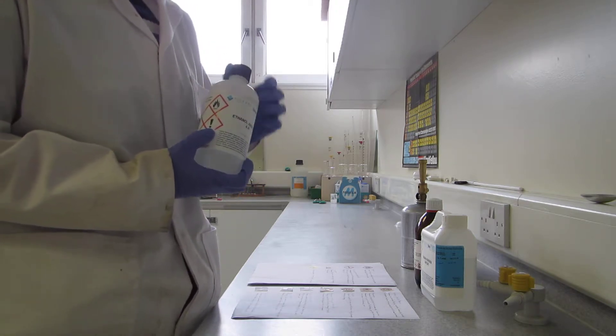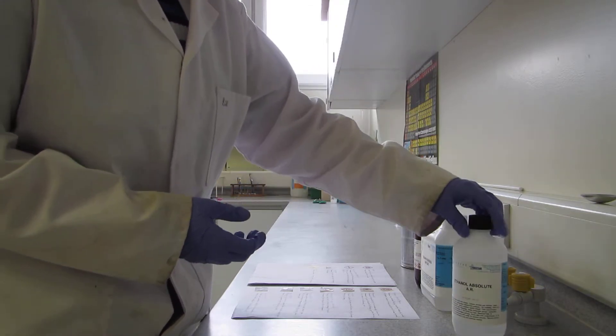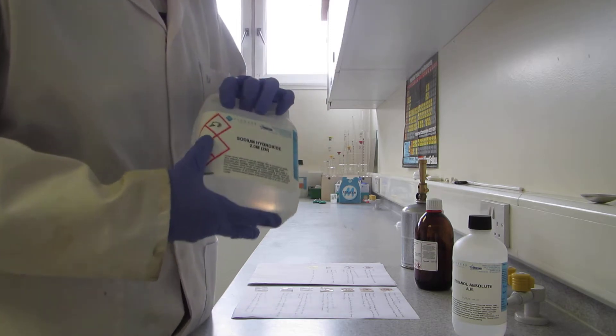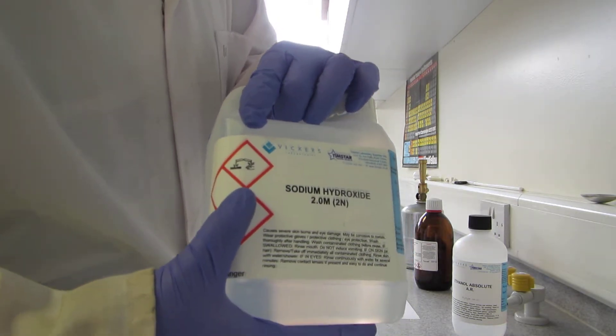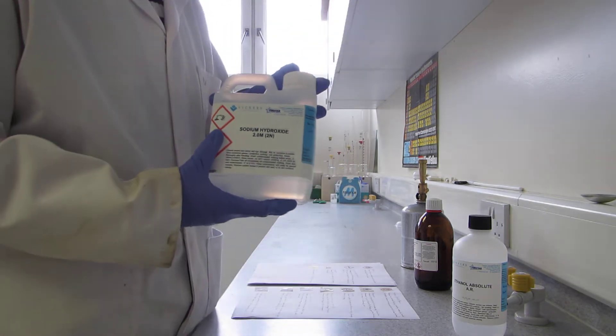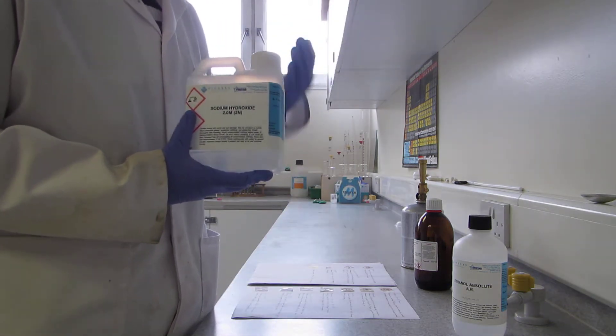The next symbol is the corrosive. This means that the chemical can cause burns to either the skin or eyes. If you wear correct PPE, this should be enough to protect your skin and your eyes.